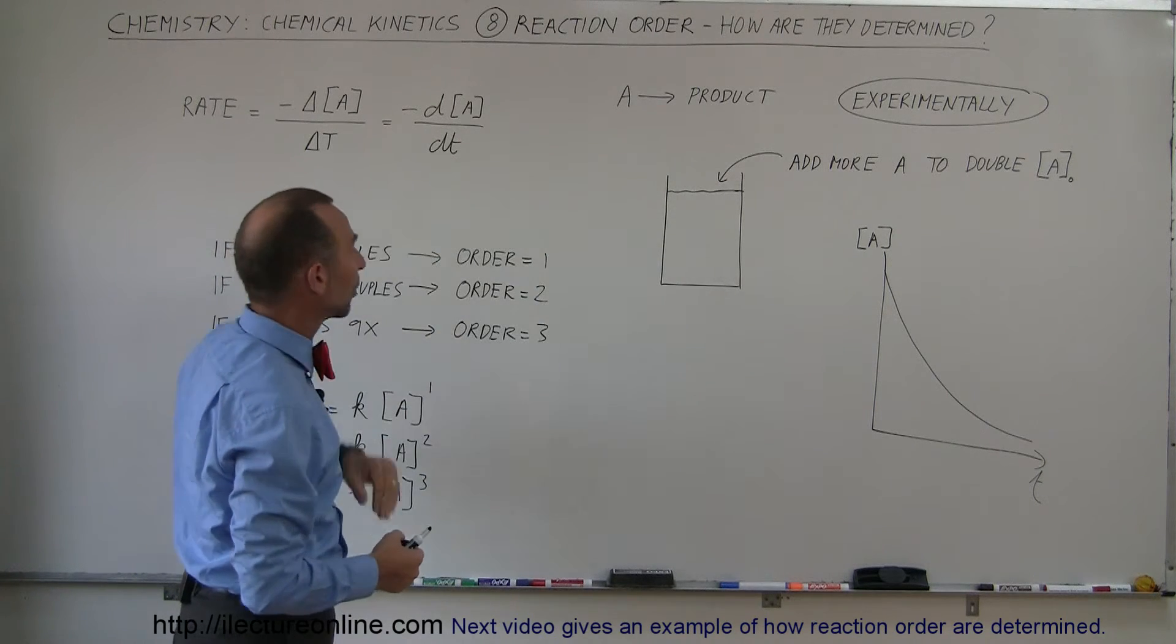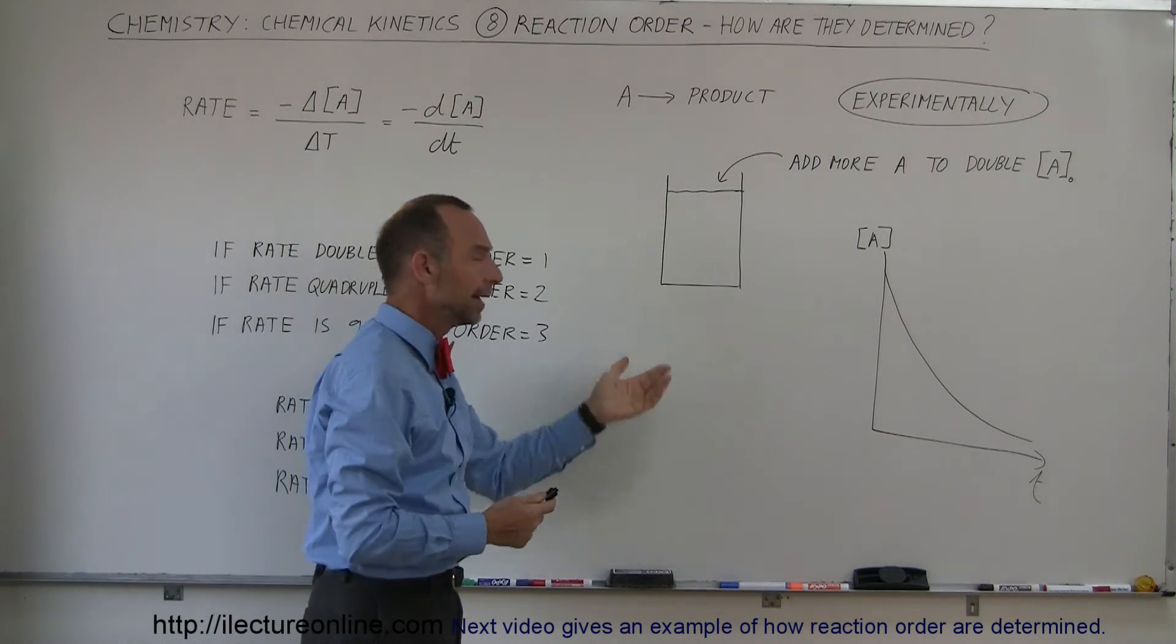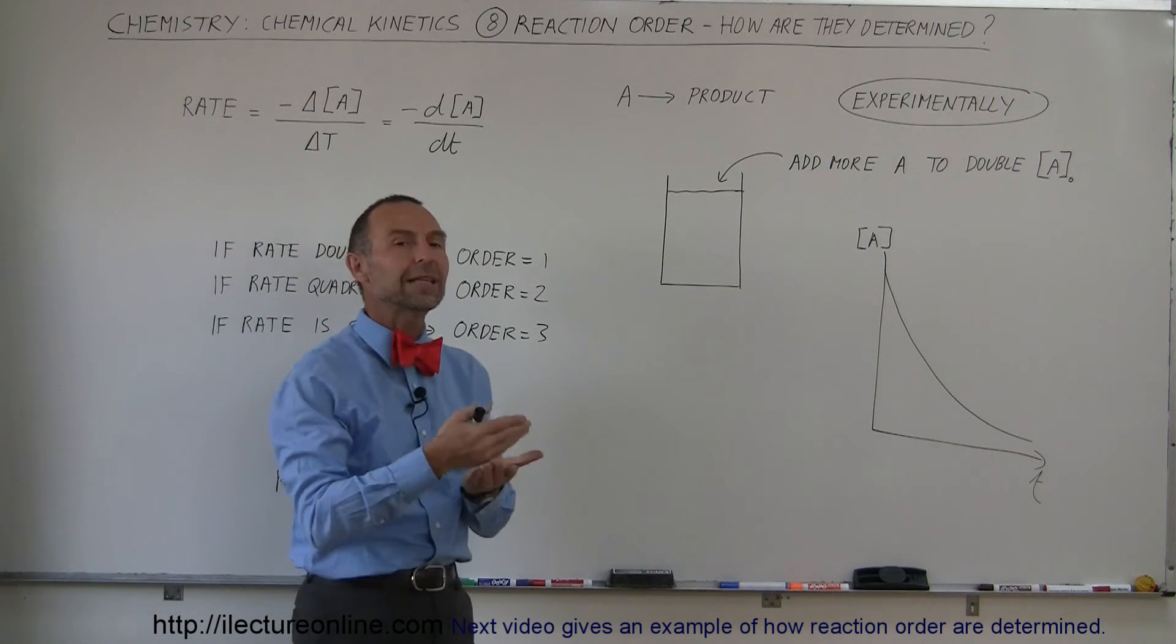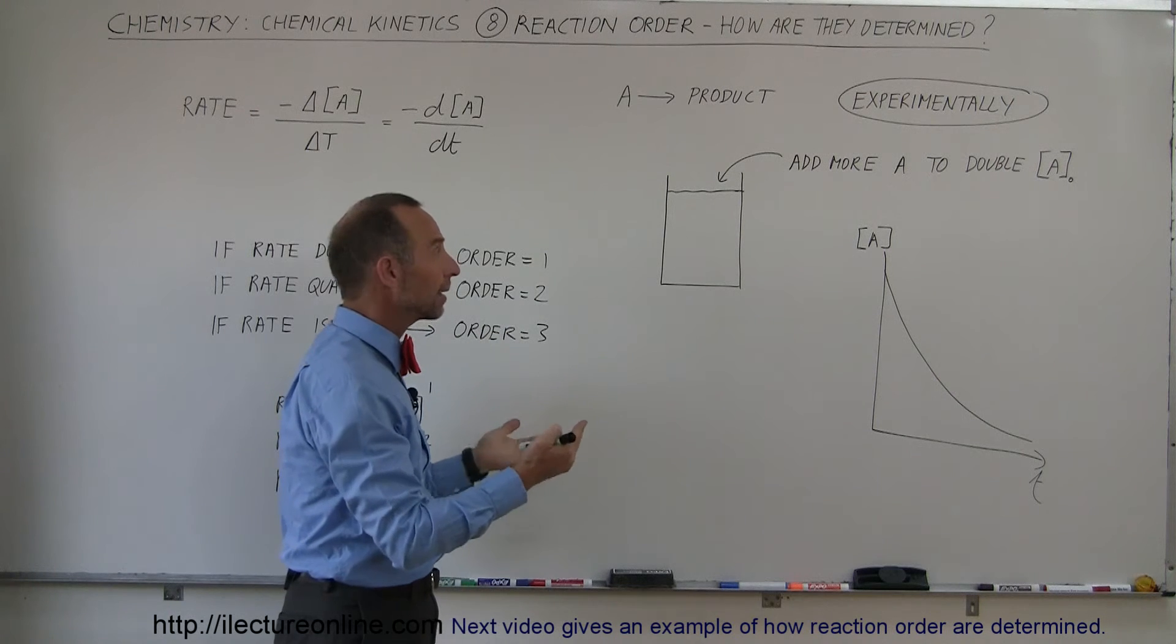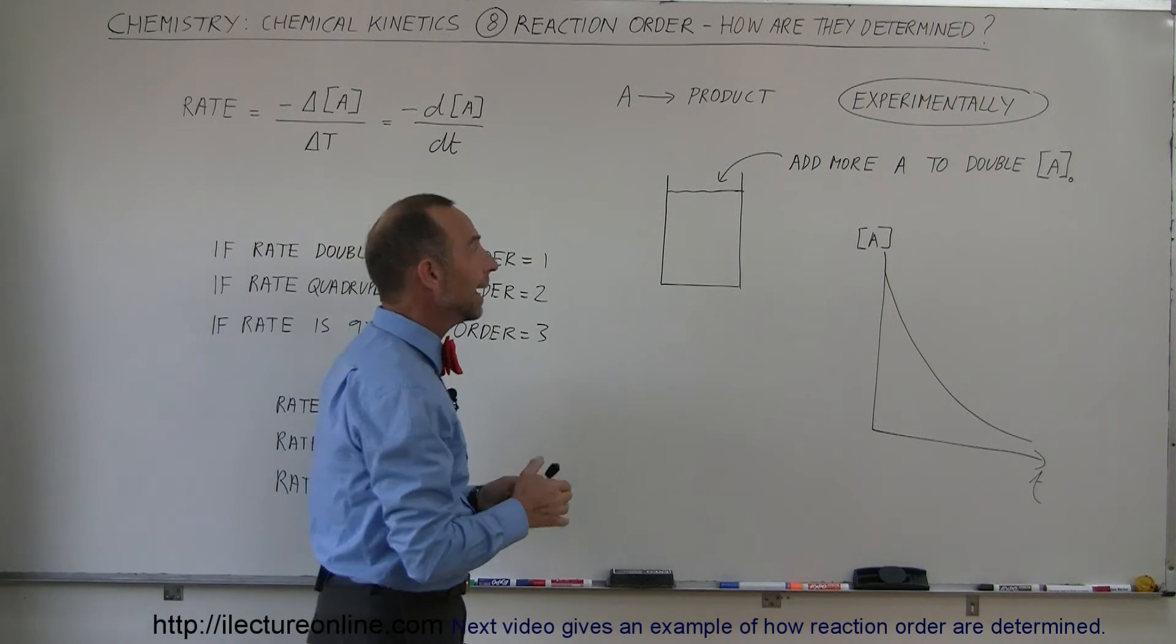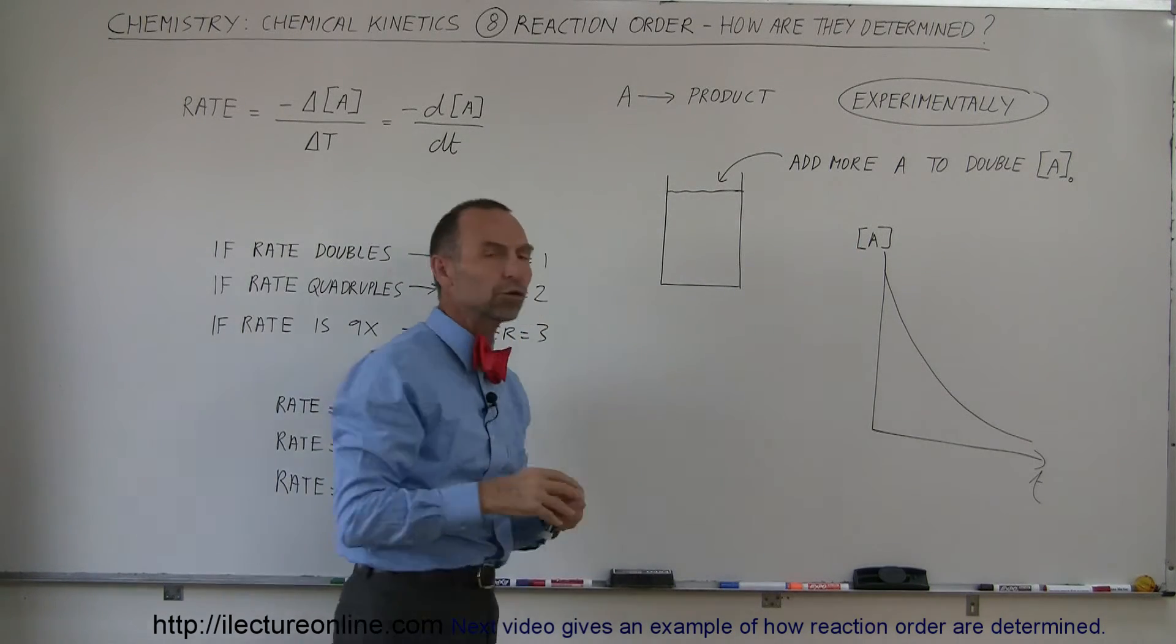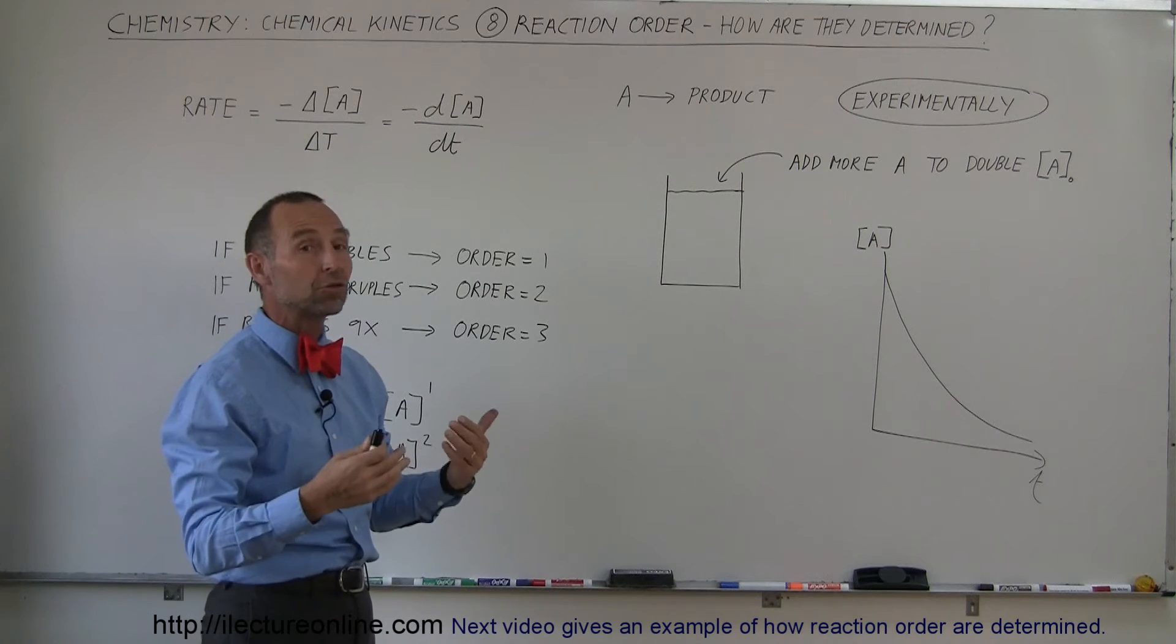So what do we do? How do we figure that out experimentally? Well, let's say we have a solution and we measure the time it takes for the reaction to complete. Then we add more A to the solution to double the concentration and measure the reaction again.